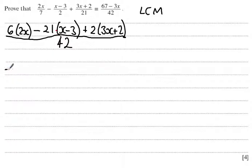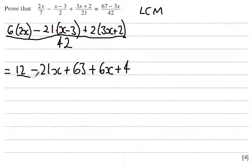Now if I expand this out, I get 12x minus 21x, then plus 63, and then plus 6x and then plus 4, all over 42.